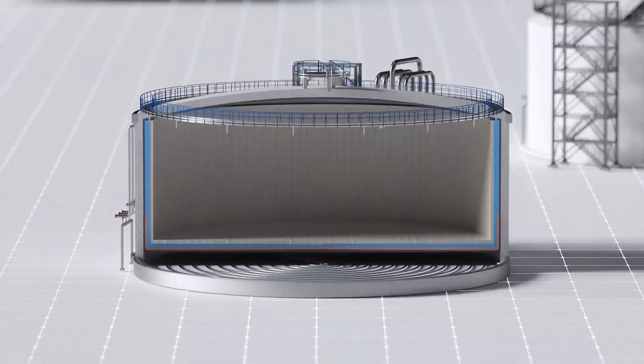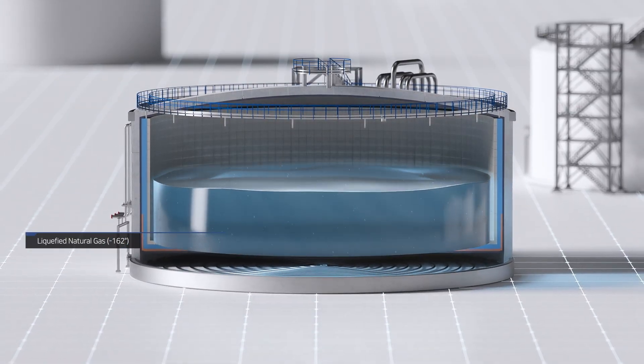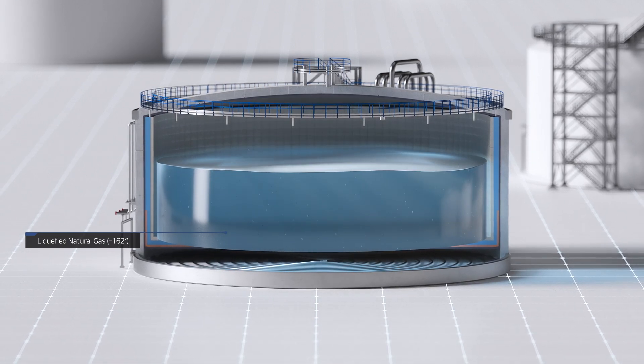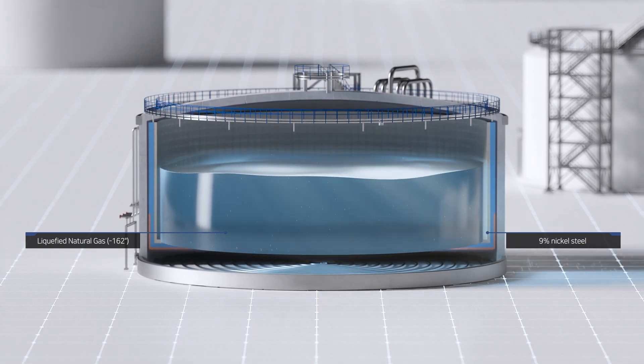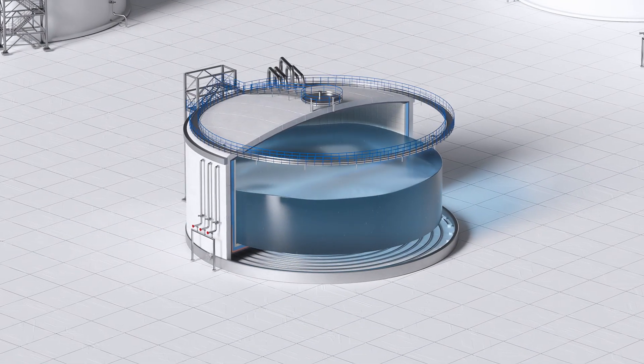LNG has a temperature of minus 162 degrees Celsius and is stored in a tank made of nine percent nickel steel, which is for an ultra-low temperature of LNG. The tank has a three-layered storage system which can control the temperature difference from outside and safely secure LNG and gas.